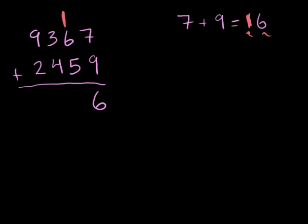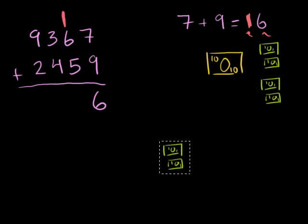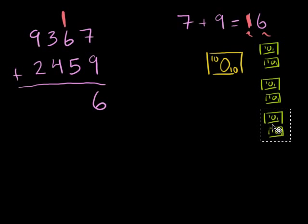In that world, you would represent 16 as one $10 bill, and then six $1 bills. So that's two $1 bills, that's two more $1 bills, and then that's two more $1 bills.